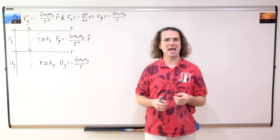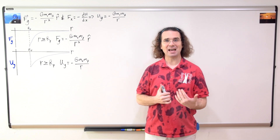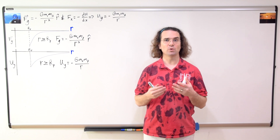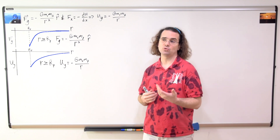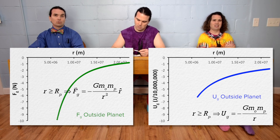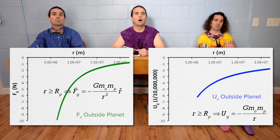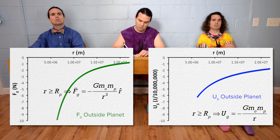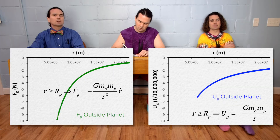On the y-axis we have force of gravity and universal gravitational potential energy. On the x-axis we have r, the distance between the centers of mass of the two objects. Both graphs are concave down. The force of gravity graph is proportional to the inverse of r squared, but the gravitational potential energy graph is proportional to the inverse of just r. Therefore, the force of gravity decreases more rapidly than gravitational potential energy as r increases.